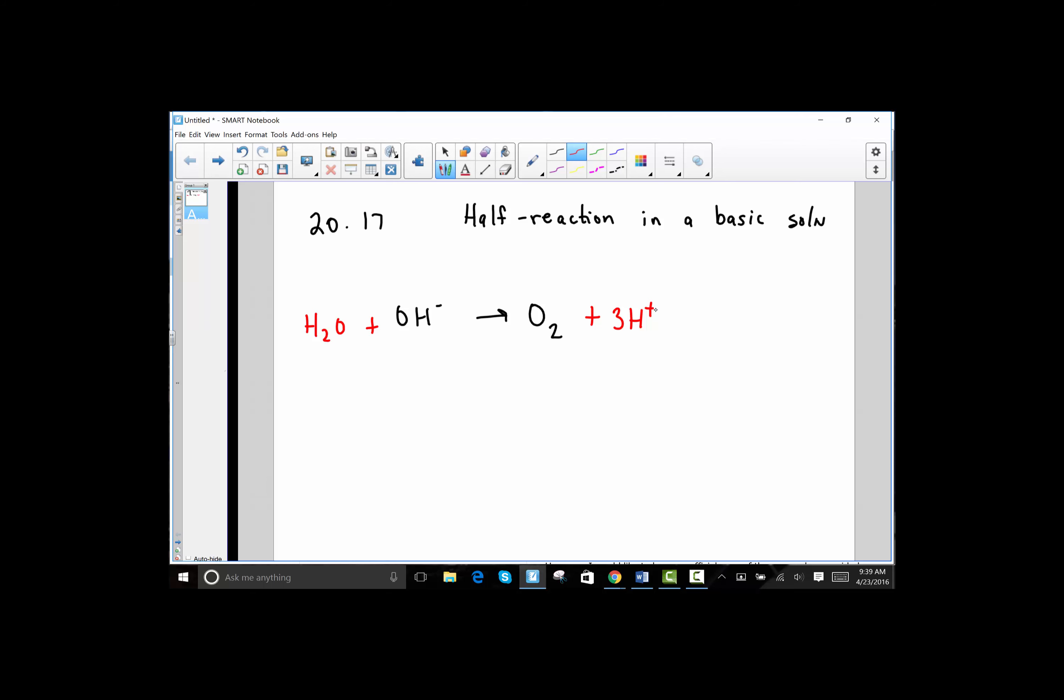We're now ready to balance the charge. When I look at the charge on the left hand side, we're at a negative one. The charge so far on the right hand side, I added positive three. To the more positive side, I'm going to add four electrons so that now the charge on both sides is the same at negative one overall. To the more positive charge, I add electrons to equalize the charge.